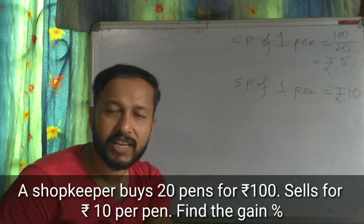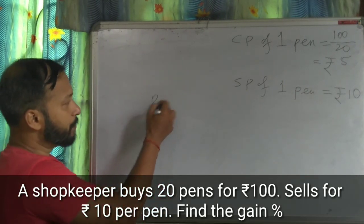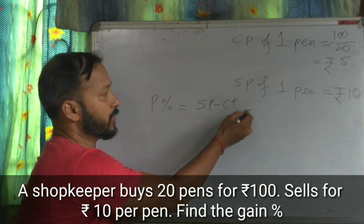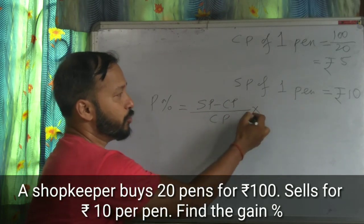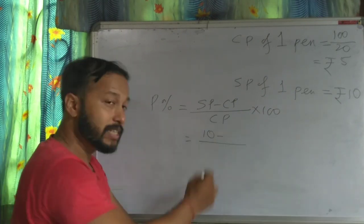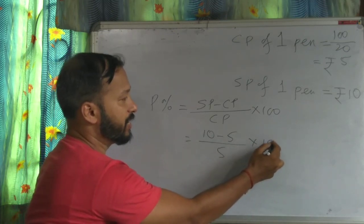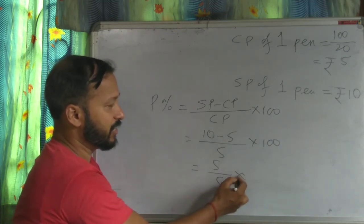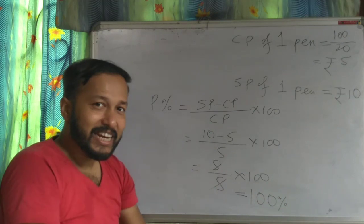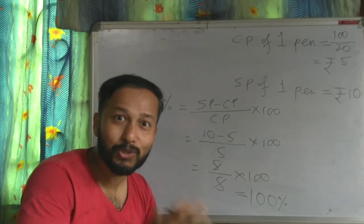Find his gain percentage. Profit percent equals SP minus CP by CP into 100. SP is 10, CP is 5. That is 5 by 5 into 100, the fives cancel, giving 100% profit. So he made a profit of 100% — a huge profit.